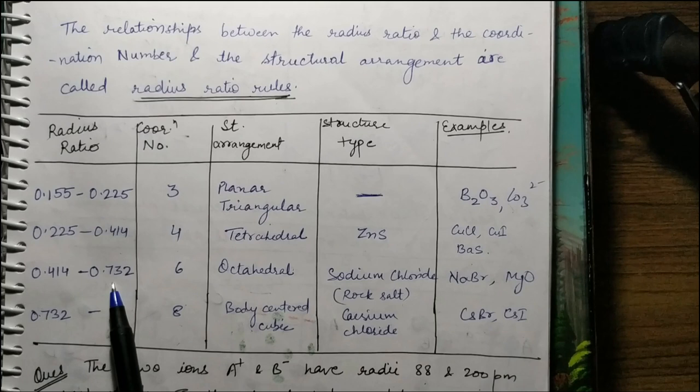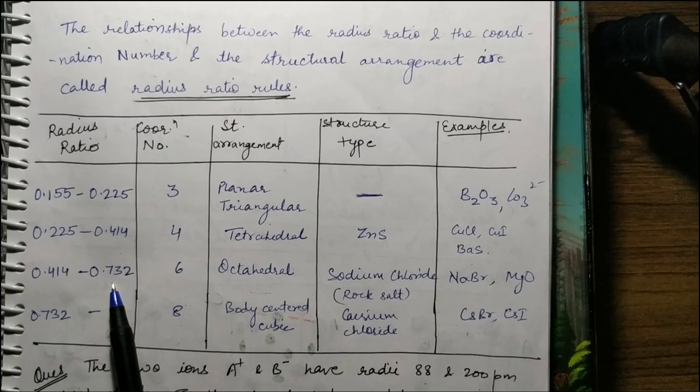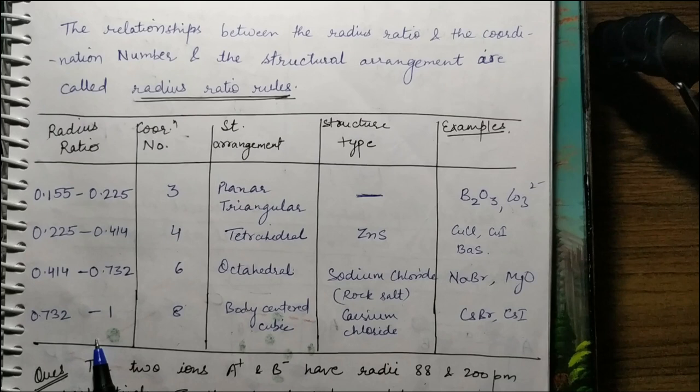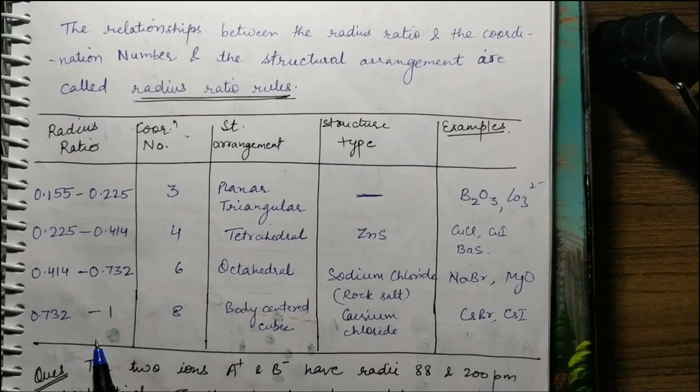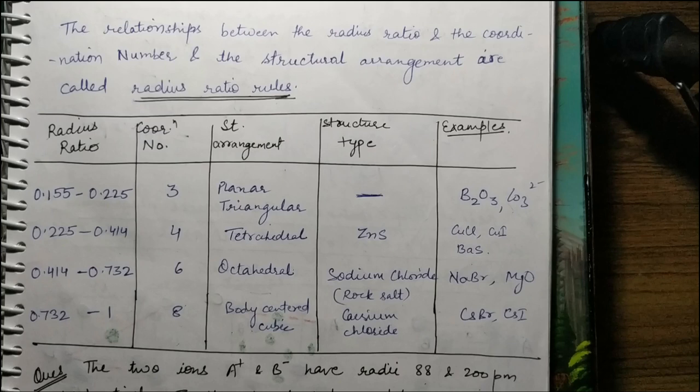The range 0.414 to 0.732 gives coordination number 6 with octahedral arrangement — structure type is NaCl type. Then the range 0.732 to 1 gives coordination number 8 with BCC-type arrangement — structure type is cesium chloride (CsCl). So this was the radius ratio rule.